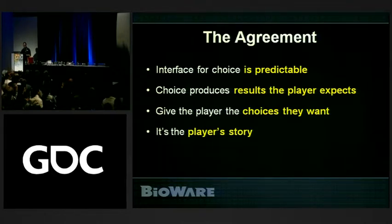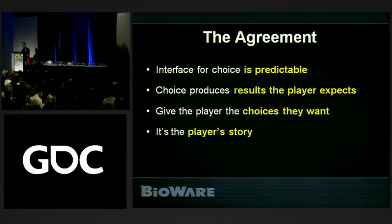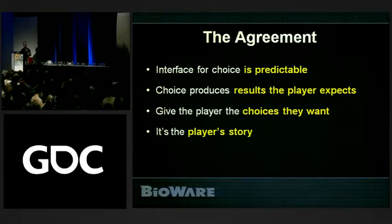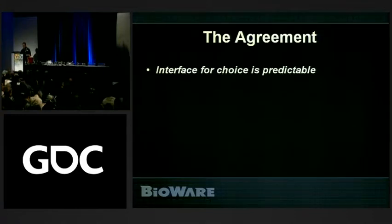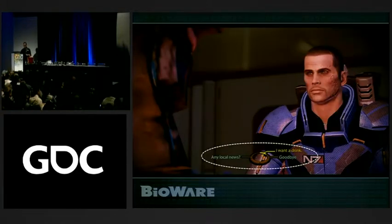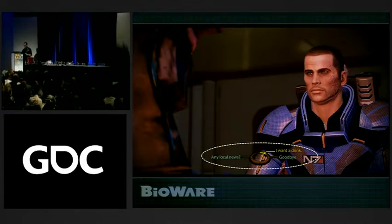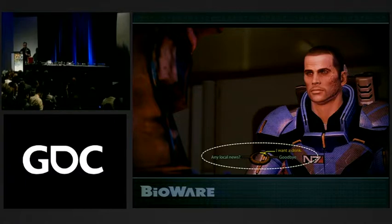Every time we're writing things at BioWare or on Mass Effect, we come down to certain principles — a litmus test for whether this is a good role-playing experience. We describe them as the covenant — something very sacred that we always come back to. The principles are: interface for choice is always predictable; choice produces results the player expects; give the player the choices they want; and it's the player's story.